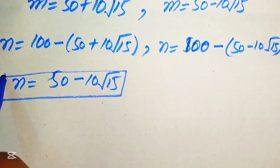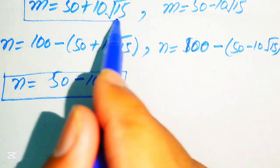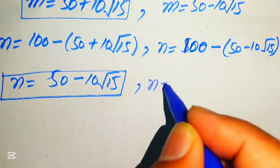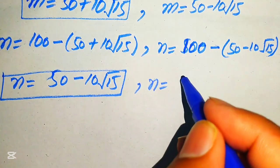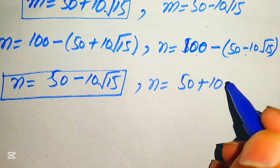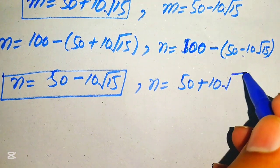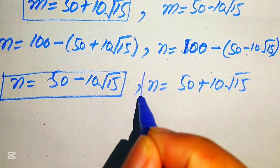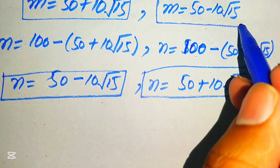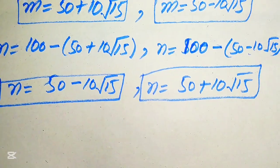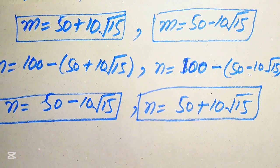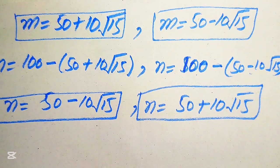This is the value of n corresponding to the first value of m. For the second case, n equals 100 minus 50 minus 10 root 15, and the negative times negative becomes positive, giving n equals 50 plus 10 root 15. This is the final answer. Thank you so much for watching this video — please subscribe to my channel for more exciting videos.